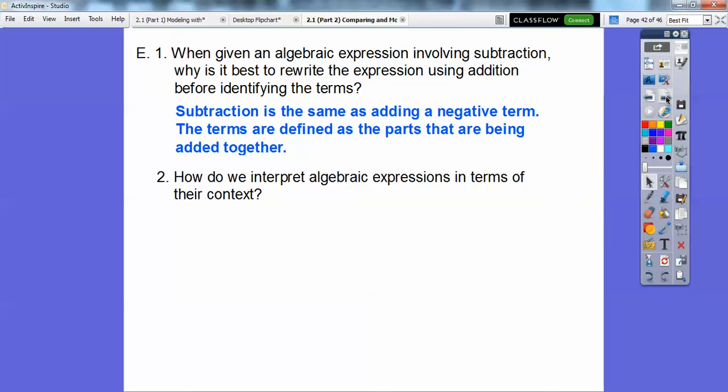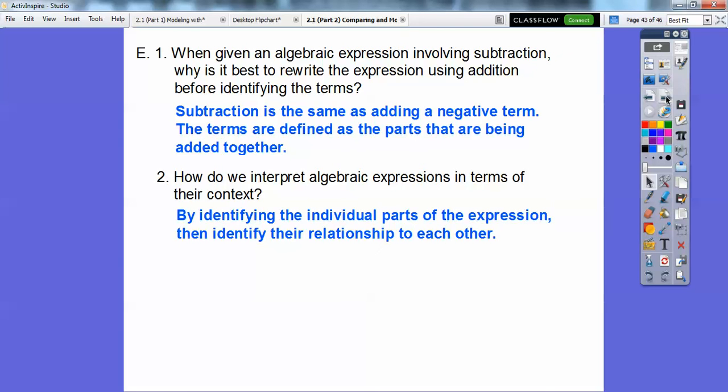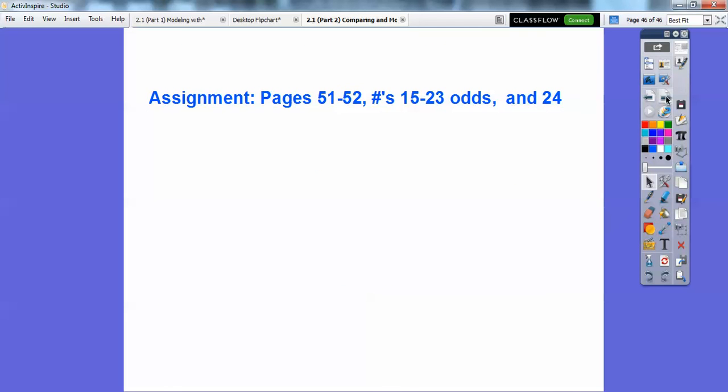How do we interpret algebraic expressions in terms of their context? We identify the individual parts of the expression and then we identify their relationship to each other. We've been doing that all along in these lessons. How do we simplify algebraic expressions? We did that already by combining the like terms. If you're in my class, I would probably assign you that. Take care, you guys. Hope it helps.